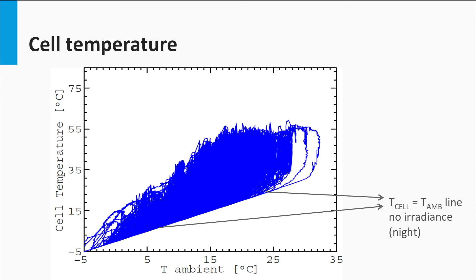The line indicates the cell temperature equals ambient temperature line. There are no data values below this line, as there are no negative irradiance values. This means that the cell temperature can never go below the ambient temperature. The least cell temperature values will be equal to the corresponding ambient temperature, and these will occur when there is zero irradiance, or in other words, at night.